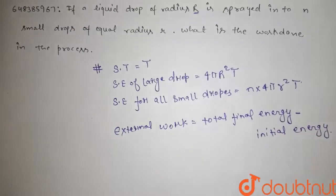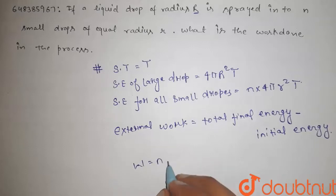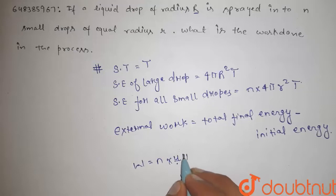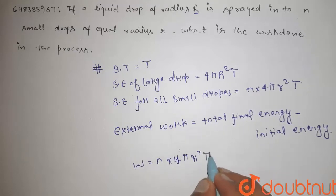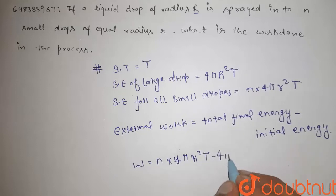That would be equal to W, the work done. Final energy is n × 4πr²T minus initial energy 4πR²T.